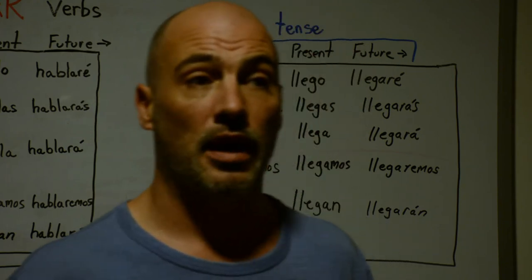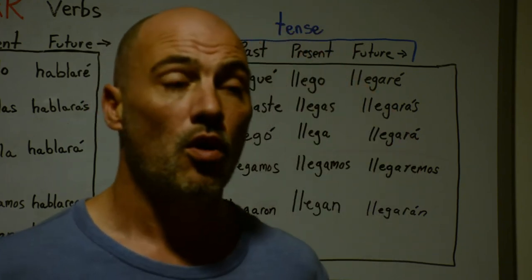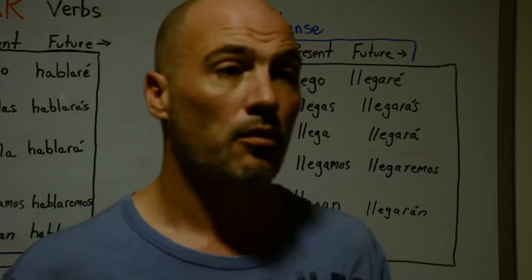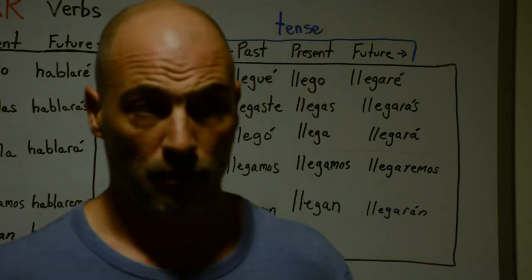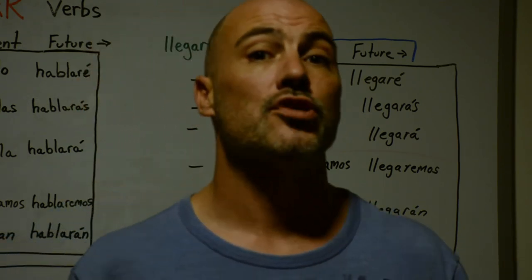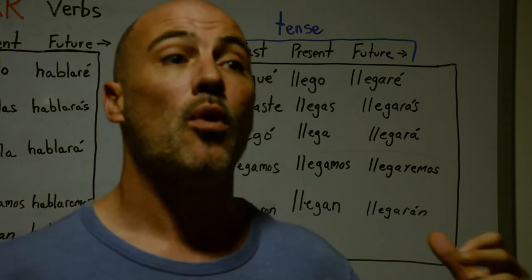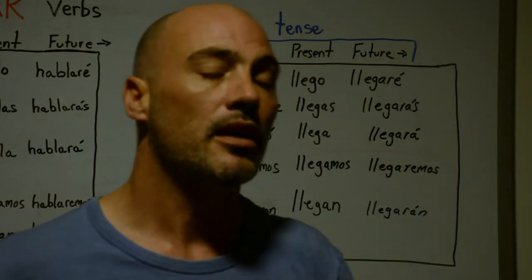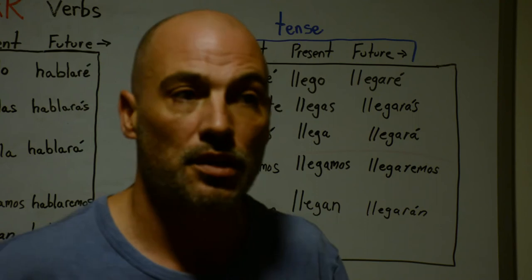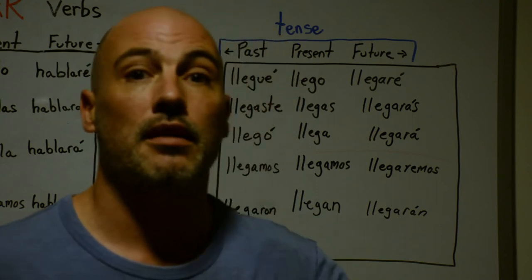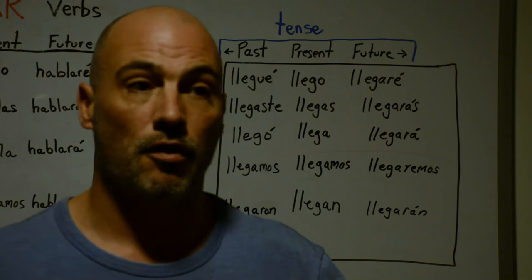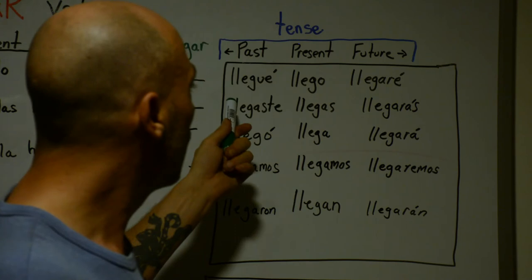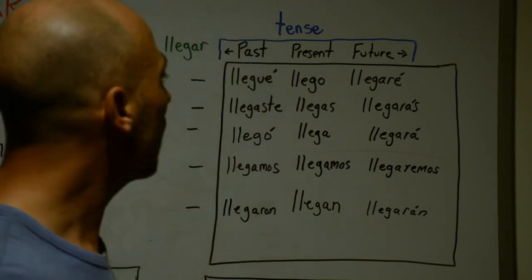An example of another AR verb is mostrar — to show. If I say 'show me' it changes: it's muéstrame. And if I'm going to show you, it's 'me voy a mostrarte.' It's conjugated differently depending on the subject. I didn't know anything about stem changes — I just remembered that in the present form, when conjugated from 'you' to 'me,' the 'o' changes to 'ue.'